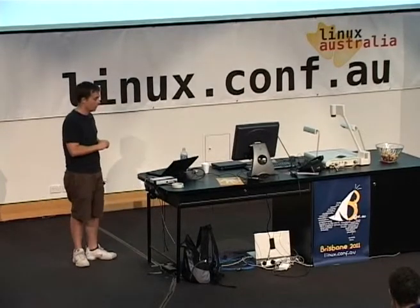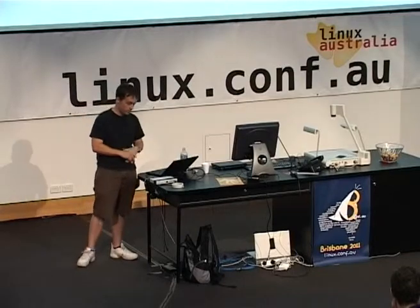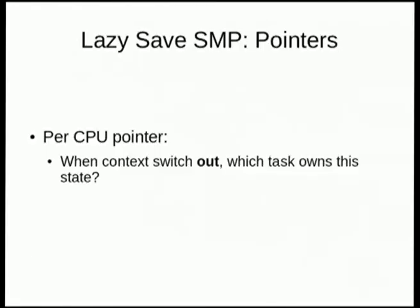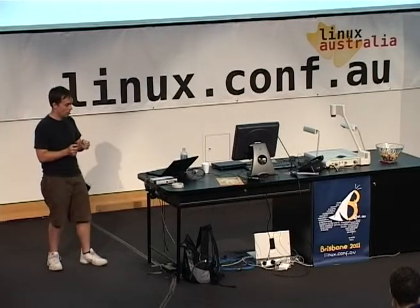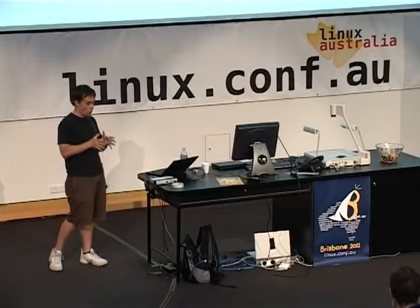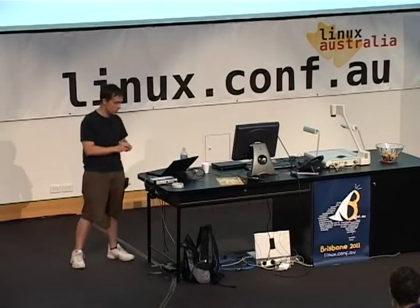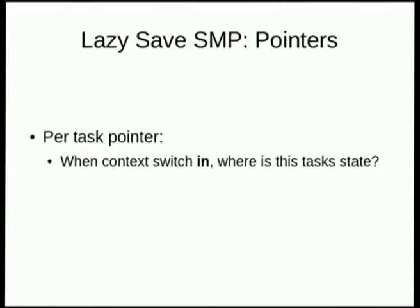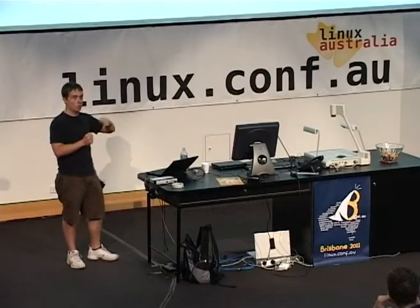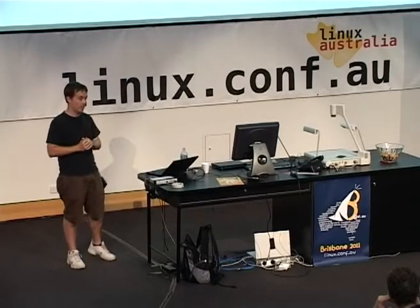To implement this we have two new pointers. The first is a per-CPU pointer — if you want to use the floating point unit associated with this CPU, this pointer tells you whose state you currently own so you can dump it. We also created a per-task pointer — if you want to context switch in a task, you need to know which CPU its state is on, or if it's in memory.